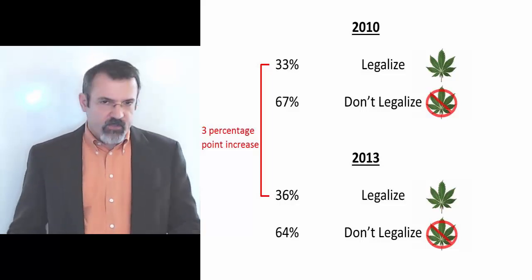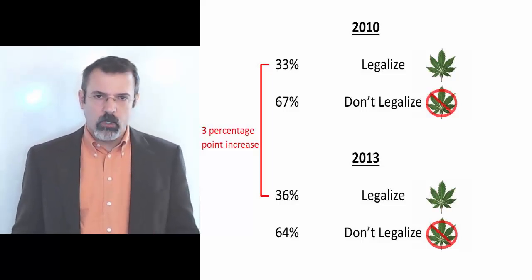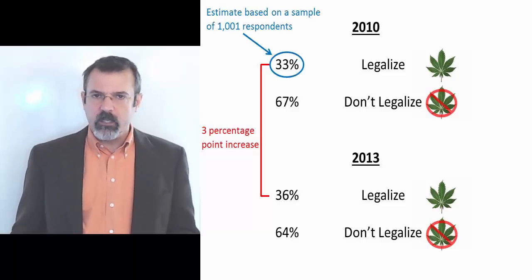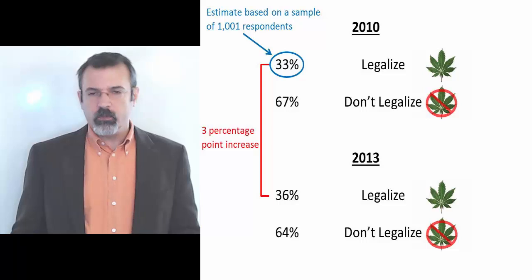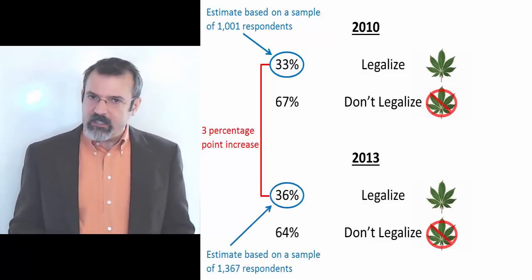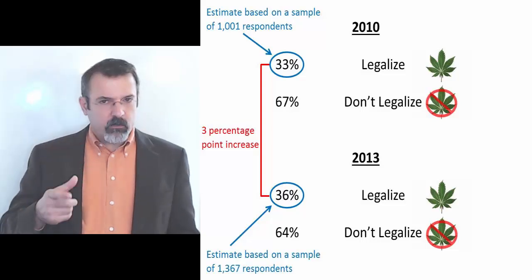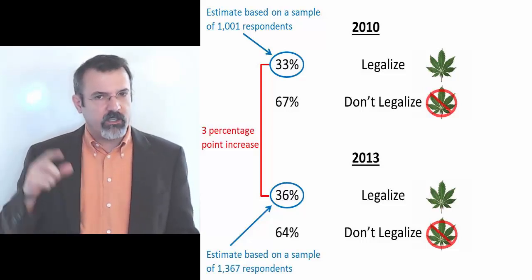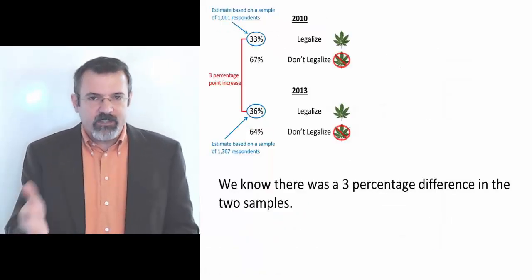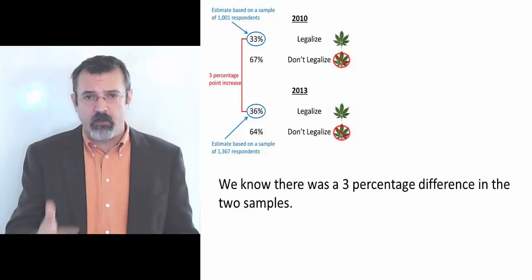The problem is that the 2010 poll was based on a survey of only 1,001 people. The 2013 poll was based on a survey of 1,367 people. So really, we don't know how Americans' perception of the legalization of marijuana has changed. All we know is the difference in the responses between these two samples of about 1,000 people.